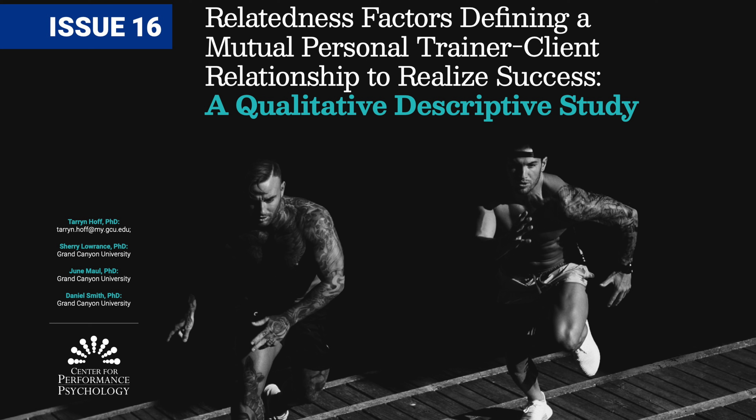Moving to the second component of self-determination theory — competence — the researcher notes the participant also scored high on the competence portion of the survey. For example, on the item 'I feel competent to achieve my goals,' they gave a completely true score of five out of five. Research question three is: how do Millennials describe competence as a contributor to realizing their personal training goals? Competence through SDT is defined as seeking control of an outcome and experiencing mastery — mastering a technique, proper diet, or nutrition to lose weight.